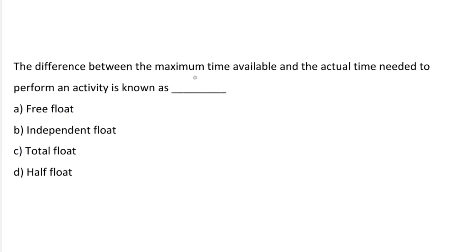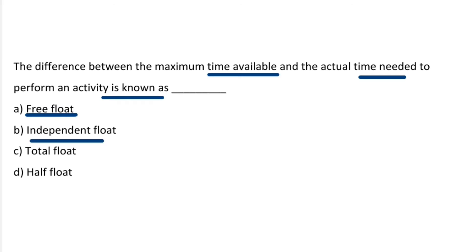Next question: the difference between the maximum time available and the actual time needed to perform the activity is known as — Option A: Free float. Option B: Independent float. Option C: Total float. Option D: Half float. The correct answer is option C, Total float.